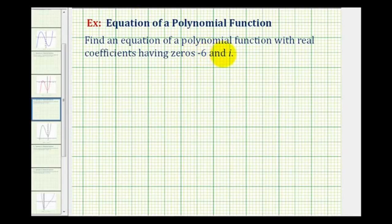We want to find an equation of a polynomial function with real coefficients having zeros negative six and positive i. So there are two important things to remember about this problem.